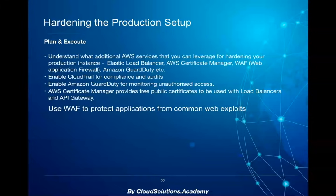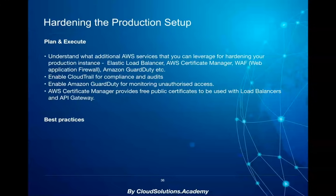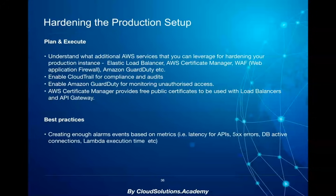Some of the best practices for managing the production environment include capturing enough metrics and tracking usage like CPU, API latency, database connections, and alerting the required team in case the thresholds are not being met. As a best practice, spend enough time defining the monitoring requirements and what needs to be captured.